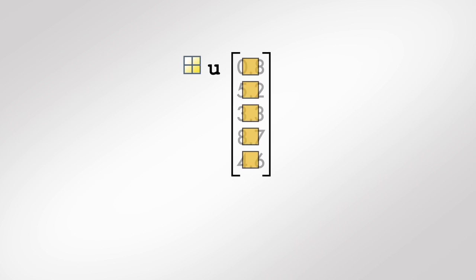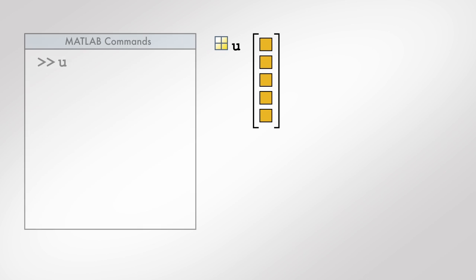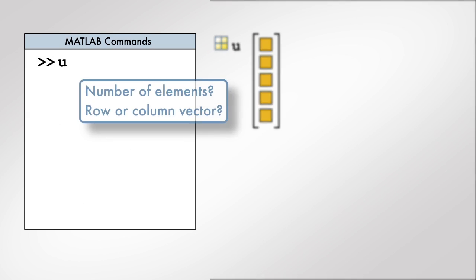Consider the vector shown. We can see that this vector is a column vector with five elements. Now consider a MATLAB variable u that represents a vector. How can we determine the number of elements in u, and if u is a column vector or a row vector?